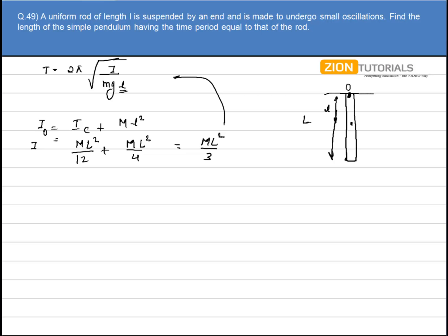So just substitute this in this equation. Time period comes out to be 2π under root of ML²/3 divided by MG into L/2.